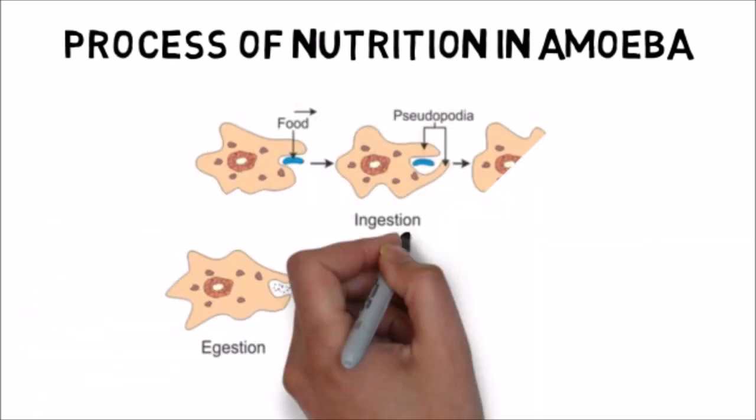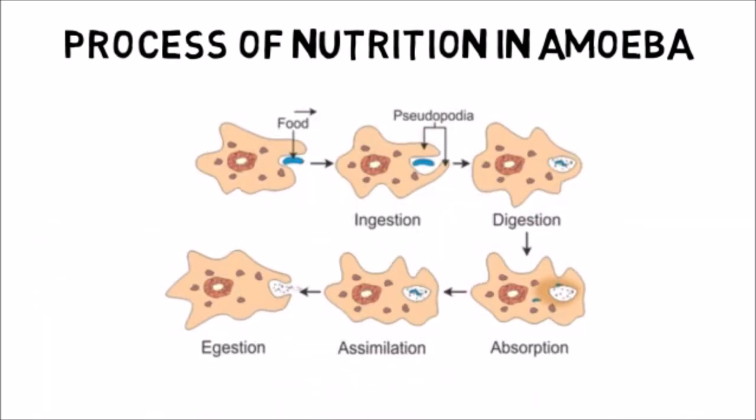To summarize, nutrition in amoeba involves five processes: (1) Ingestion — taking in food by swallowing or absorbing; (2) Digestion — breaking large insoluble food molecules into soluble molecules; (3) Absorption — absorption of nutrients from digested food into the cytoplasm; (4) Assimilation — obtaining energy from absorbed food molecules; (5) Egestion — excretion of undigested material.